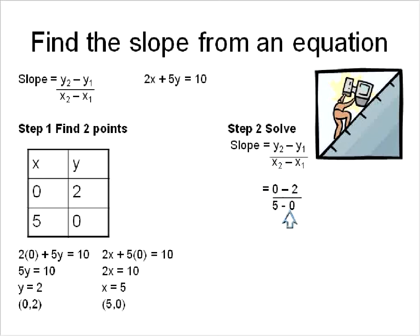So I plug that all into here. 0 minus 2 is negative 2. 5 minus 0 is a positive 5. So I'll end up with the fraction of negative 2 over 5 as my final slope for this equation.